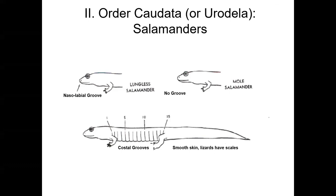Remember they're amphibians, so they have smooth skin. Lizards have scales. It's not uncommon for me to get a picture from the general public asking what type of lizard they've found in their window well or under a log — the fact that it doesn't have any scales is an indication that it's not a lizard at all, but a salamander. With regard to reproduction, most have internal fertilization, but there are two families that are exceptions. Sperm and eggs are stored separately inside the female, and those eggs are fertilized as they move down the oviduct. Salamanders eat worms, insects, and even other salamanders — they are all carnivorous.